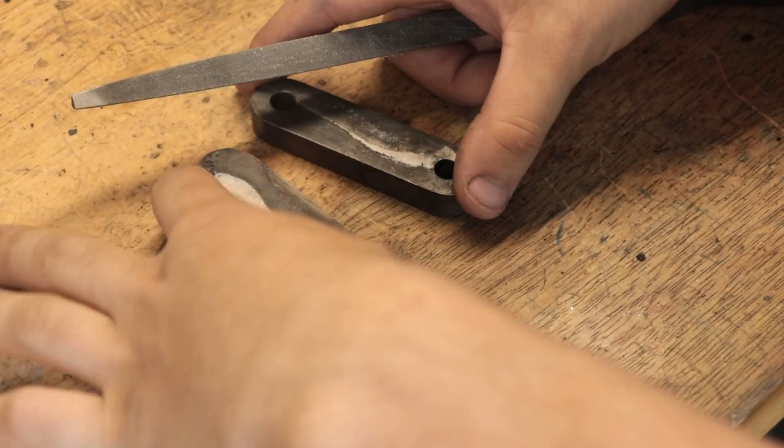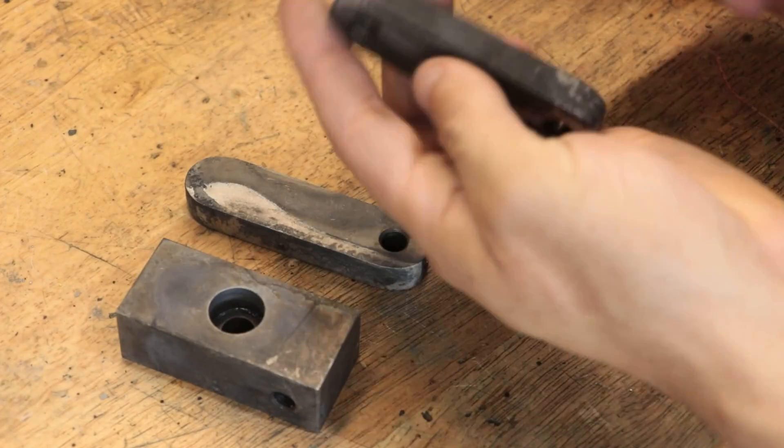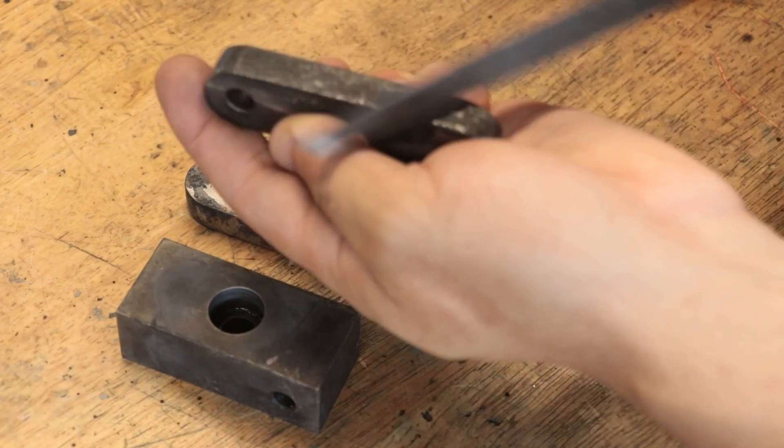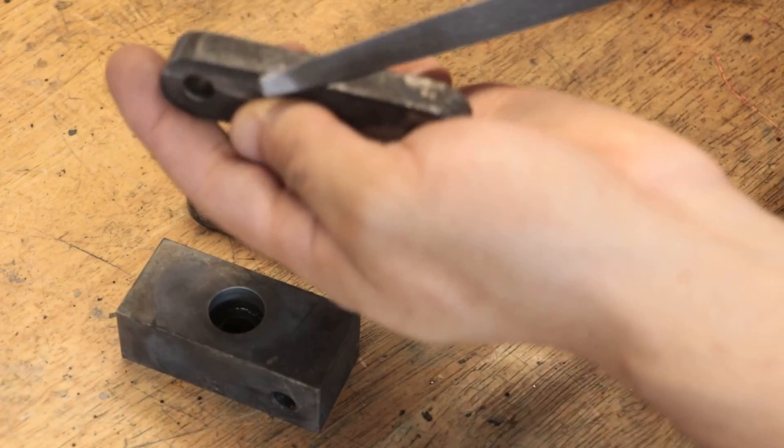The resulting parts are now glass hard, and they will need to be tempered back, but they're also now covered in scale, which will also need to be cleaned off.